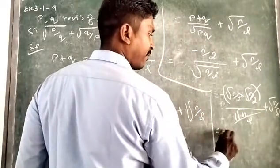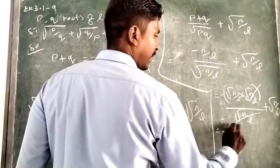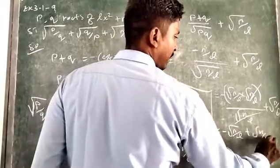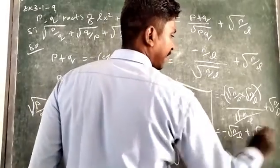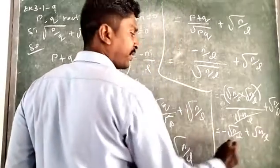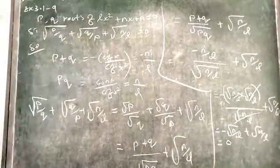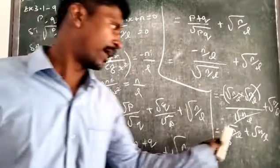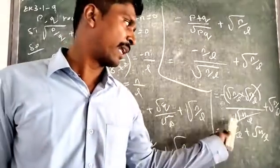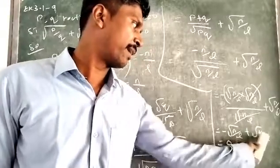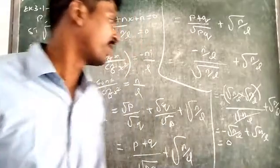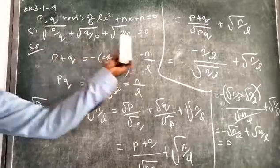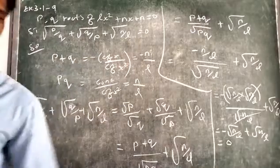So, both the like terms will cancel and become zero. Minus of root N by L plus root N by L — if we add, it becomes zero. So, we verify the result: the sum of the entire term equals zero.